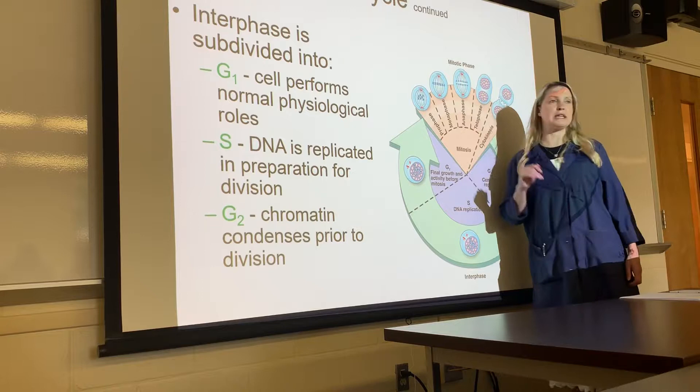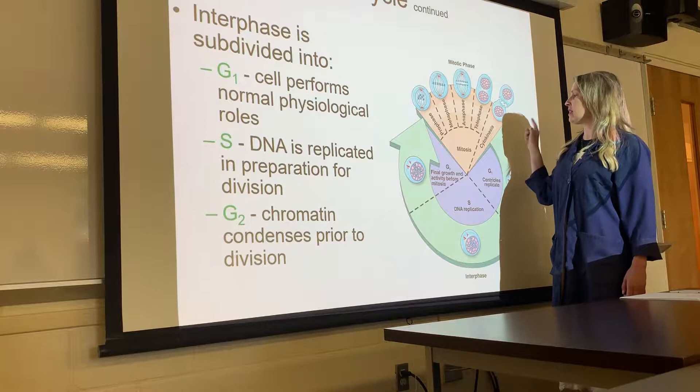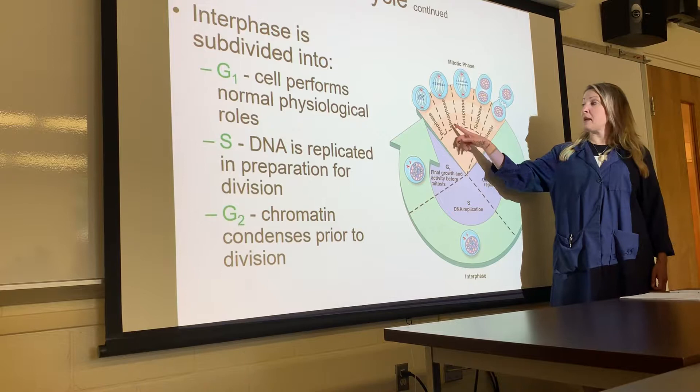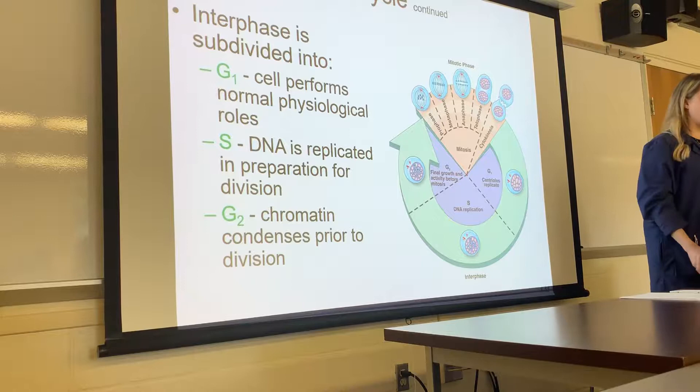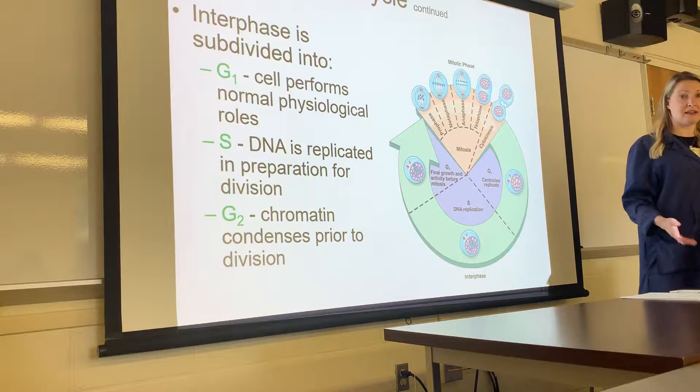Mitosis is subdivided into phases: prophase, metaphase, anaphase, and telophase — and then the cytoplasm splits in cytokinesis, producing two cells. I always remember the order using PMAT: prophase, metaphase, anaphase, telophase. Once you know what happens in each phase of mitosis, it helps with meiosis too, since many of the same things occur.